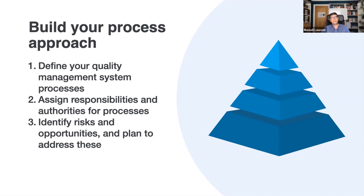The second key element of building your process approach is to assign responsibilities and authorities for processes — work out who is responsible for what process. When doing this, pay particular attention to involving employees in building the process-based QMS, training individuals so they understand their roles and accountabilities in relation to processes from end to end. Audit programs should be structured around processes, not job or role functions. Ensure you can get the documented information needed to support the operation of processes — in other words, evidence that your monitoring or KPIs are being met — and have the right procedures and work instructions in place.